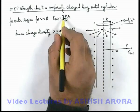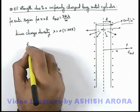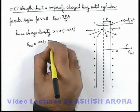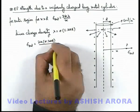If we substitute this lambda over here, this electric field in outside region can be written as 2 k sigma into 2 pi R divided by x.